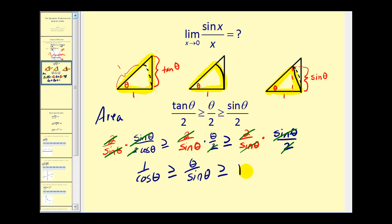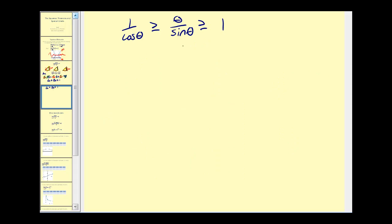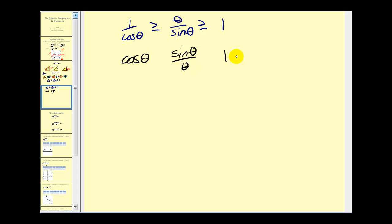Let's take the reciprocal of each of these terms, so we'd have cosine theta over one, then sine theta divided by theta, and of course the reciprocal of one is equal to one.